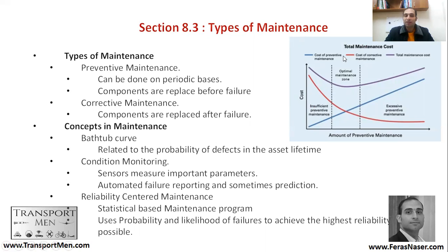The two biggest types of maintenance are preventive maintenance and corrective maintenance. Preventive maintenance tries to maintain the component before it fails, using strategies such as periodic maintenance or condition monitoring. Corrective maintenance happens after a failure. A graph shows the blue line representing the cost of preventive maintenance and the red line representing the cost of corrective maintenance.